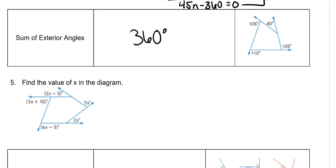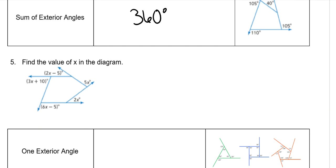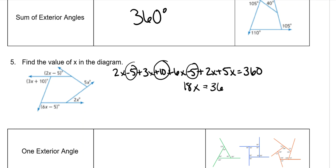Find the value of x in the diagram. We're going to add them all together and set them equal to 360. So 2x minus 5 plus 3x plus 10 plus 6x minus 5 plus 2x plus 5x equals 360. Combine all of those x's together and you get 18x. All the constants actually end up canceling because negative 5 and negative 5 give you negative 10, then you add 10 and it's 0. So 18x equals 360. Divide both sides by 18 and x equals 20.